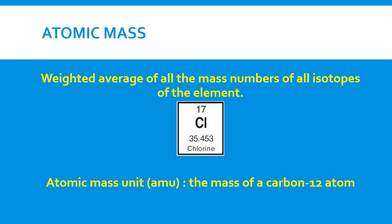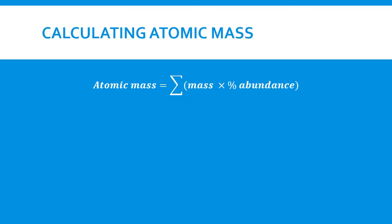On the periodic table, the number we see at the bottom of an element is its atomic mass. The mass of an atom is extremely small, so masses of atoms are compared to a standard reference isotope based on isotopic composition. The isotopic composition of an element is the percent abundance and mass of its isotopes. Carbon-12 is the reference isotope and has been assigned an atomic mass of exactly 12 AMU.